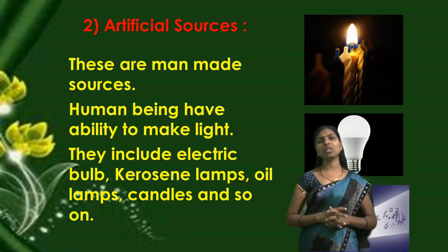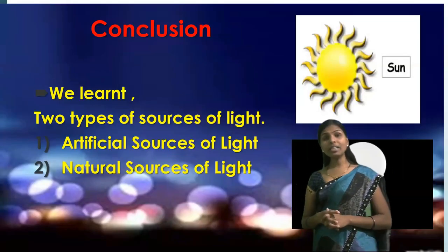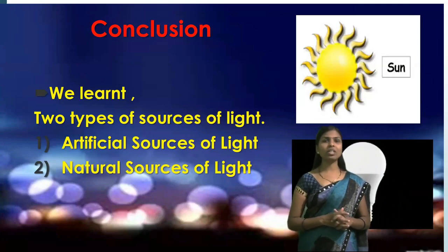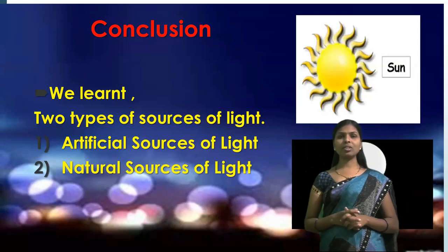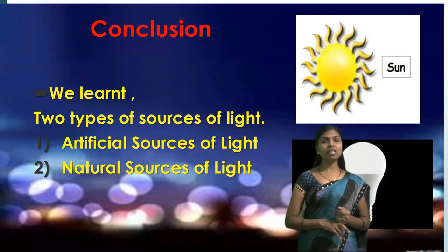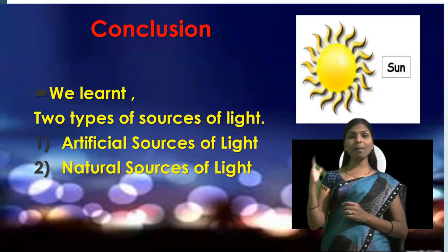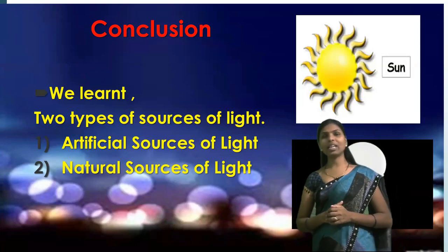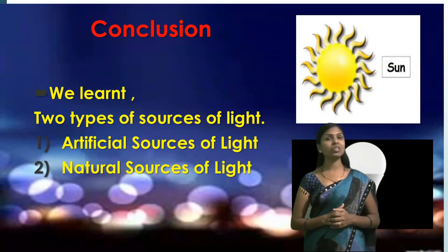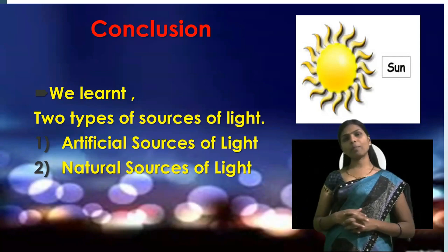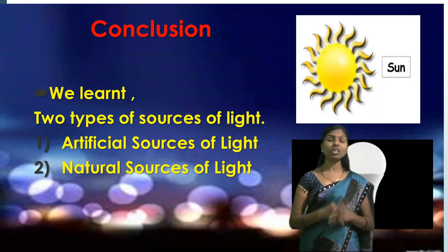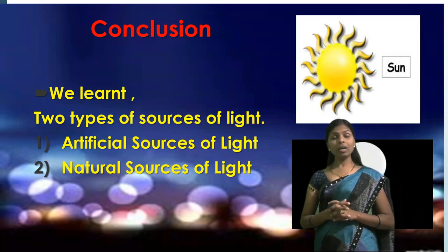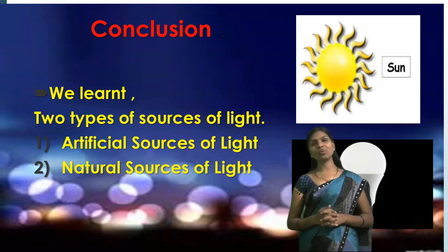In this video we learned about natural sources of light and artificial sources of light. In natural sources, the greatest example is the Sun, followed by stars, the Moon, and living sources like glowworms and jellyfish. Artificial sources of light — also called man-made sources — include many different types of lamps, oil lamps, electric lamps, and kerosene lamps.